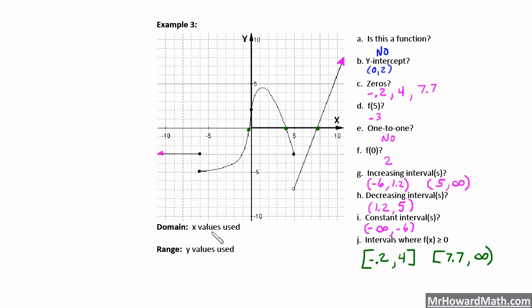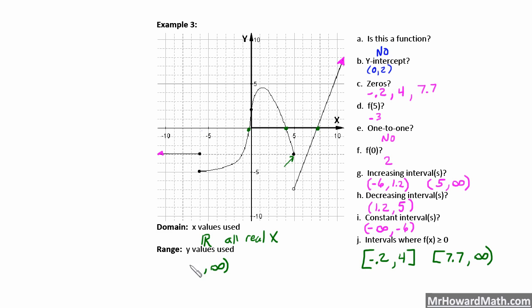Domain — what x values are used? The graph goes from negative infinity all the way to positive infinity, and even at x equals 5 it is defined at that solid dot. So the domain is all real numbers — we can write ℝ or all real x. Range — what y values are used? The graph goes on forever upward, so we have positive infinity. The minimum y value is at negative 7 with an open circle, so we put a parenthesis: (−7, ∞). And that's it for this video — see you in the next one.